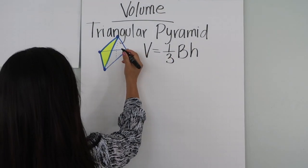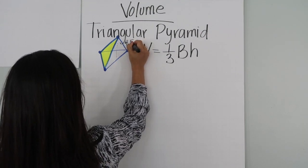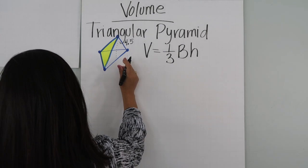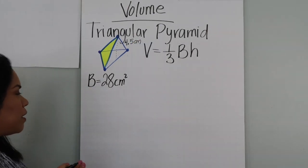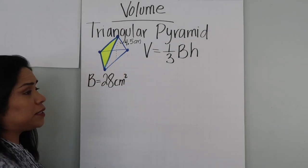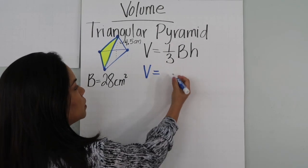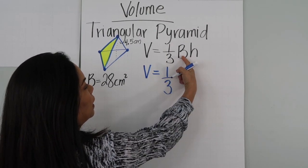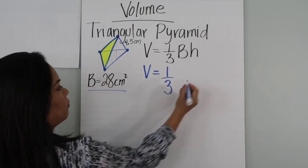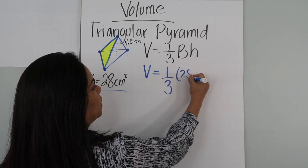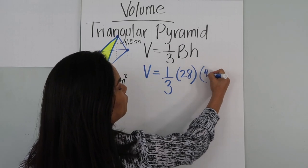Let me give you the dimensions. The height is 4.5 centimeters. By giving you capital B, you don't have to calculate the area of the base yourself — you will see some examples like that. So volume equals one-third times the area of the base, which is given as 28, times the height of the pyramid, which is 4.5.